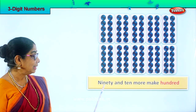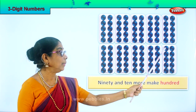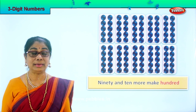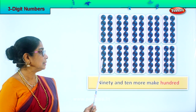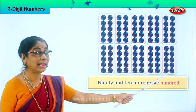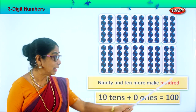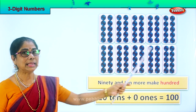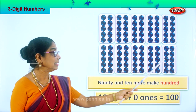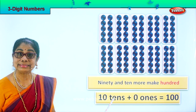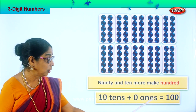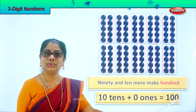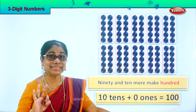Ninety and ten more make one hundred. Ten, twenty, thirty, forty, fifty, sixty, seventy, eighty, ninety — and ten more. So ninety and ten more make one hundred. That is ten tens plus zero ones equal to one hundred. Ten tens is one hundred. How do you write one hundred? One, zero, zero. One hundred — that is a three digit number.